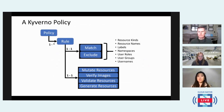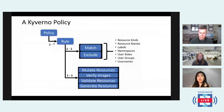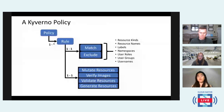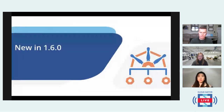This is the structure of a Kyverno policy. A policy is just a Kubernetes CRD, and you can create multiple cluster policies or policies as Kubernetes CRDs. In each policy you can define one or multiple rules. Within each rule, you will have a match and exclude block to select various resources based on different information. In the rule body you can specify one of four types of rules: mutate, validate, generate resources, as well as verifying image signatures and attestations. This is just a quick entry into Kyverno.